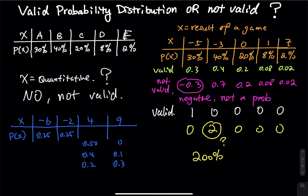Now, what if the last probability is 0.1 — how do you find the one missing value? Take 1, subtract 0.25, then subtract 0.10. You lose 0.50 and then another 0.10, so overall you have 0.40 left. That missing probability is 0.40.